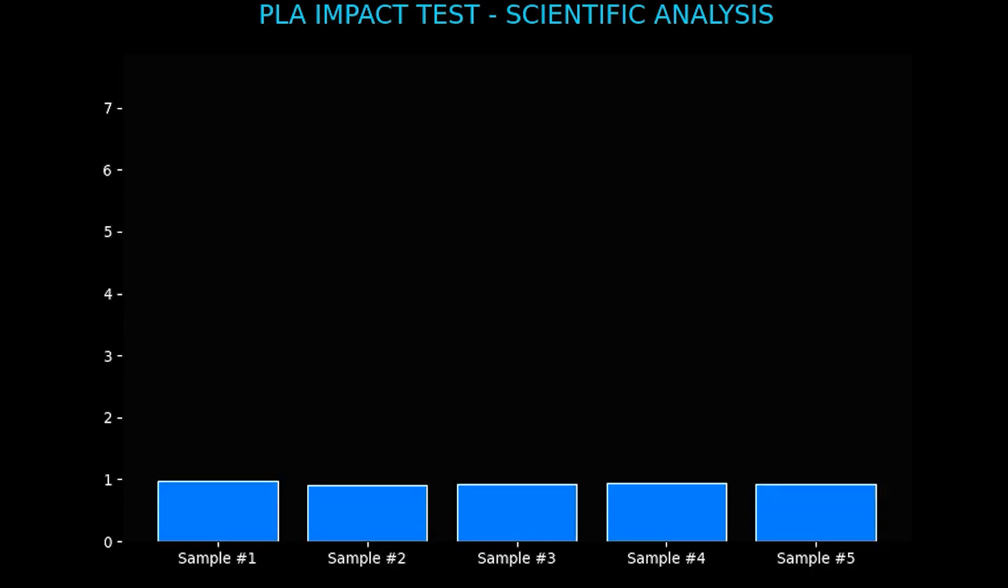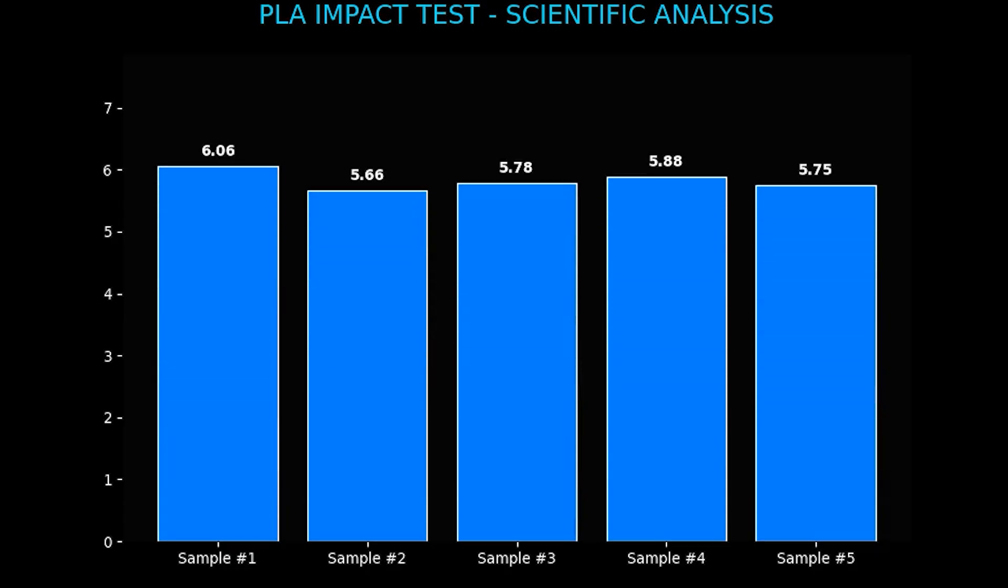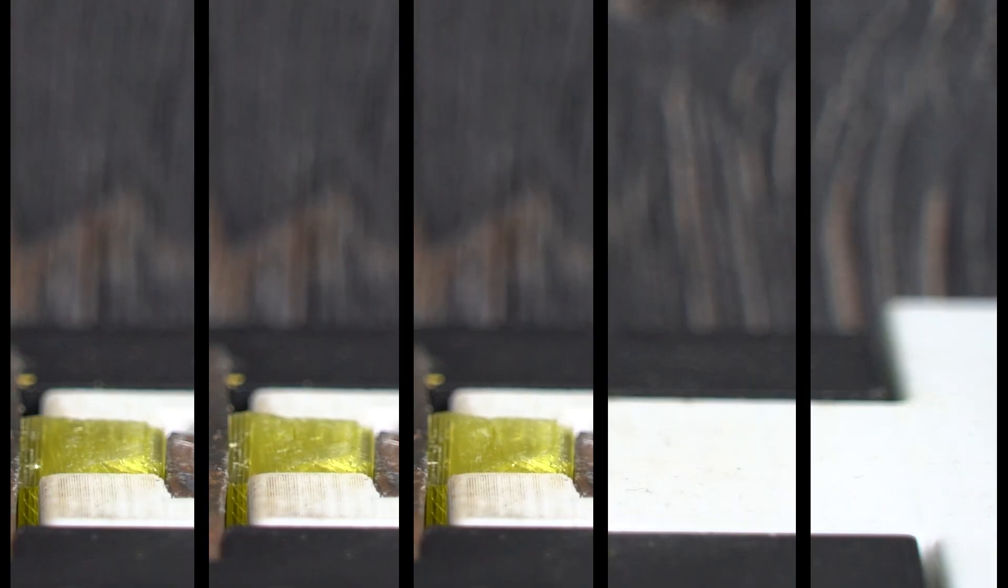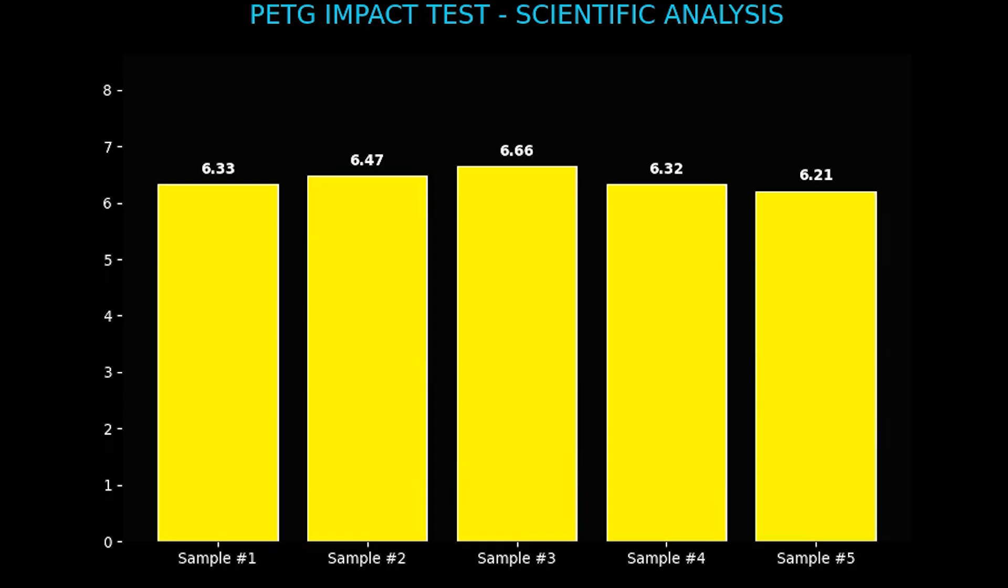First up, we start with PLA. Now, let's look at the results. First, PLA, average of 5 tests, 5.95 kilojoules per square meter. Now, PETG, average 6.39 kilojoules.